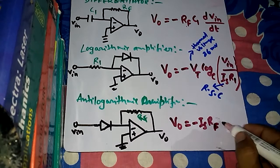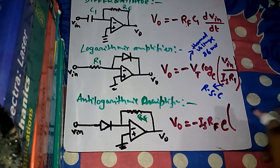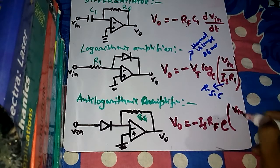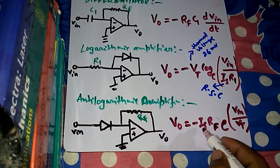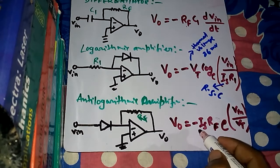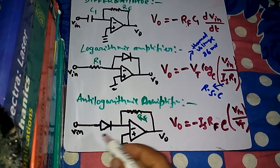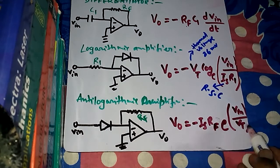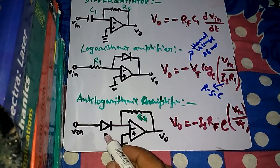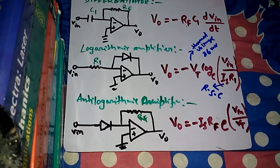The standard output for the anti-logarithmic amplifier is: V-output equals minus I-S times R-F times e to the power of (V-input divided by V-T). Again, V-T (thermal voltage) and I-S (reverse saturation current) appear because there is a diode in the circuit — these terms always come into existence whenever a diode is used.